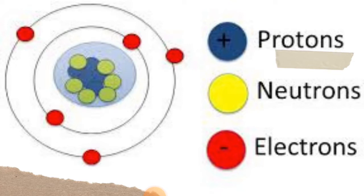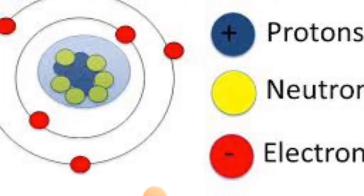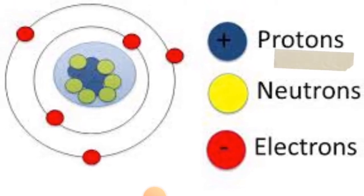Protons are positively charged particles while neutrons have no charge. Then electrons are found outside the nucleus and they are negatively charged.